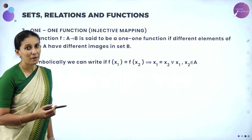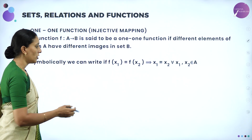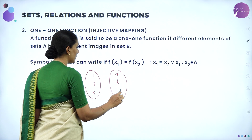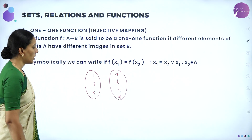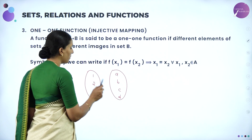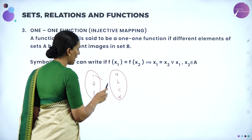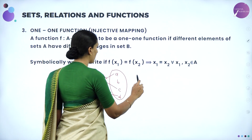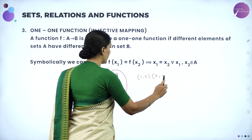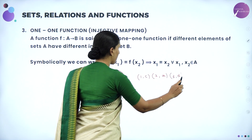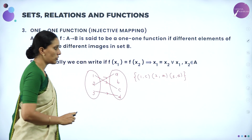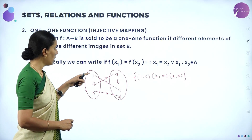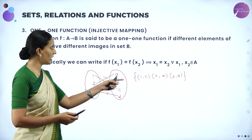One-one function: as the name suggests, one element, one image. For example, with A = {1, 2, 3} and B = {a, b, c, d}, connect 1 to c, 2 to a, 3 to d. The image of 1 is c, image of 2 is a, image of 3 is d. This is a function because every element of A has an image in B, and all images are unique — no elements share the same image. A function f from A to B is one-one if different elements of A have different images in B. To prove this theoretically, if f(x1) = f(x2) then x1 = x2.